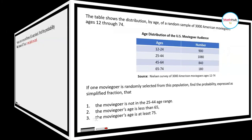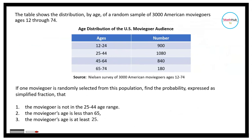Consider the table below. It shows the distribution by age of a random sample of 3,000 American movie goers, ages 12 through 74. If one movie goer is randomly selected, find the probability — expressed as a simplified fraction — that: number one, the movie goer is not in the 25 to 44 age range; number two, the movie goer's age is less than 65; and number three, the movie goer's age is at least 25.